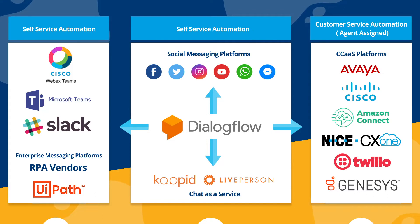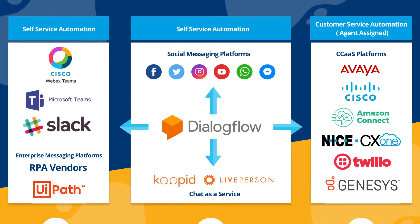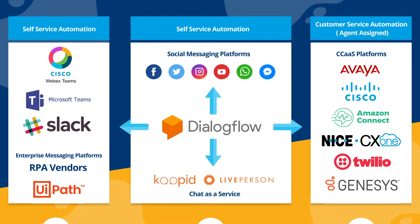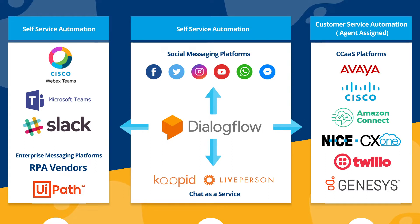Servion also built a custom connector for voice channel and non-voice channels like chat, SMS, social media and email. The Servion-built connector helps to integrate customer touchpoints including enterprise UC solutions like Slack, Microsoft Teams, and Cisco Teams.